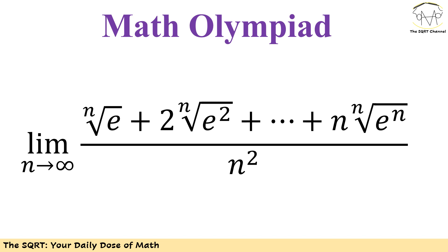Here we are going to find the limit of 1 over n squared times the nth root of e plus 2 times the nth root of e squared, up to n times the nth root of e to the power of n, where n goes towards infinity. Let's see how we are going to solve this problem.